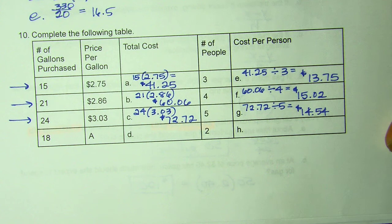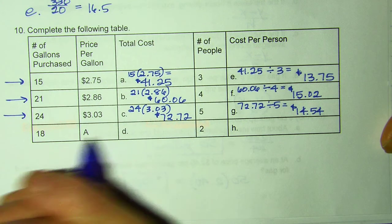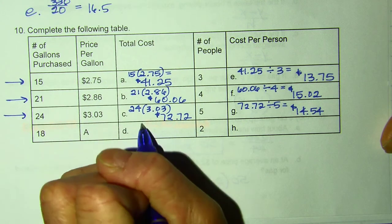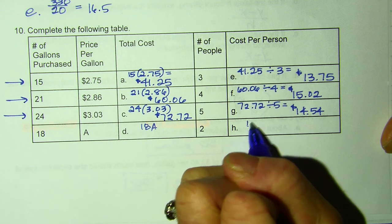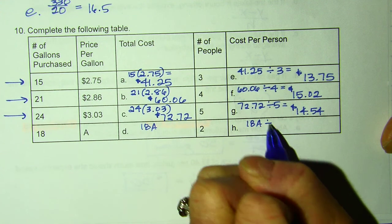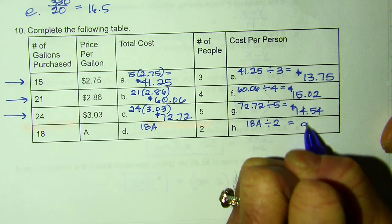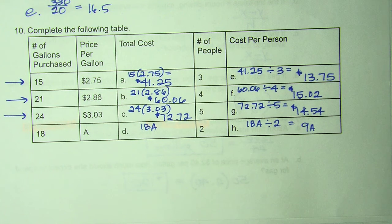So now we're going to use that to do it algebraically. So I remember we're multiplying. So 18 times A. There are two people. So it would be 18A divided by 2, which equals 9A. Pretty simple, but that is how you would do that box.